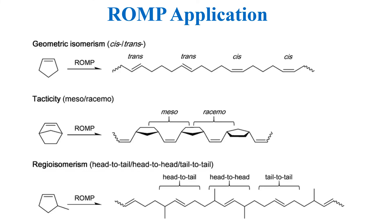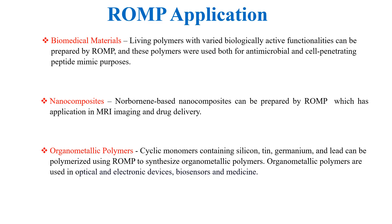By selecting the right monomer, catalyst and experimental conditions, we can synthesize stereoselective polymers. Stereoselectivity mostly occurs due to steric crowding or the coordination of the recently formed double bond to the metal center. Ring opening metathesis polymerization is also used to synthesize biomedical materials, nanocomposites and organometallic polymers.